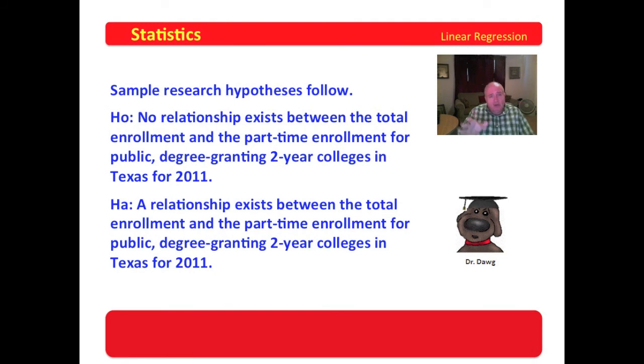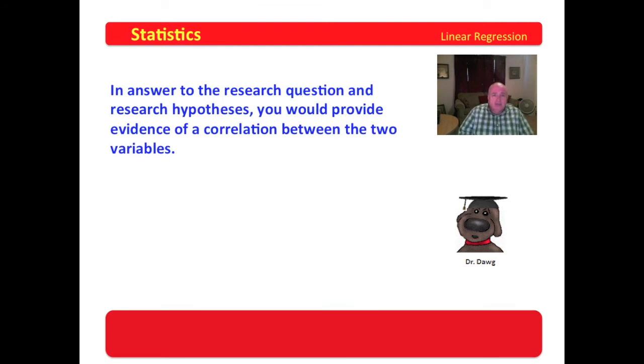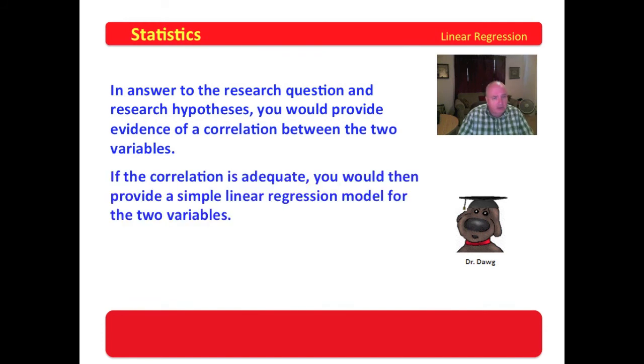You have a descriptive question, your methodology question, and then your research hypotheses. In answer to the research question and the research hypotheses, you would provide evidence of a correlation between the two variables. If the correlation is adequate, you would then provide a simple linear regression model for the two variables.